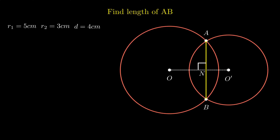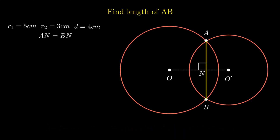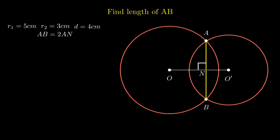Consider a point N on the chord AB such that O is perpendicular to AB with reference to the circle with center O. By the application of the theorem — any line perpendicular from the center to the chord bisects the chord — we conclude segment AN is equal to segment BN. Therefore, segment AB is twice of segment AN. We will focus on segment AN to calculate the length of segment AB.